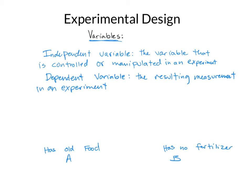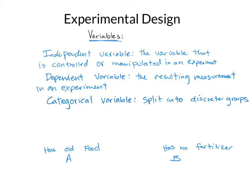There is also a type of variable based on the type of measurement you're going to make. You have what's called a categorical variable, which is a variable that is split into discrete groups. That's what we did here — we made Plot A and Plot B into different groups, one with fertilizer and one without. We could also have done different types of fertilizer: old food in A, Miracle-Gro in B, and some other fertilizer in C — each of those would be a category.